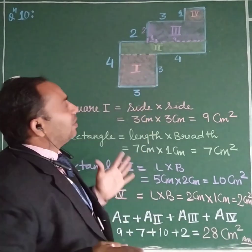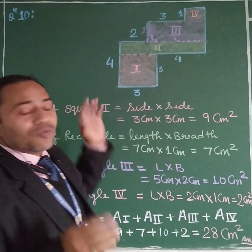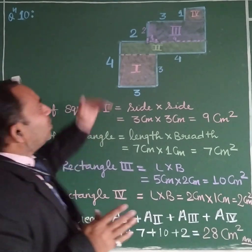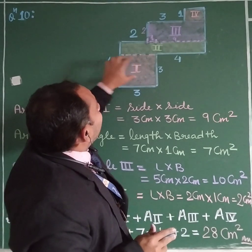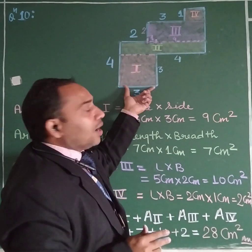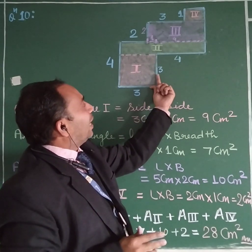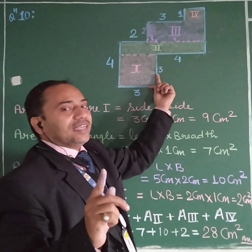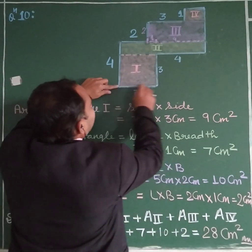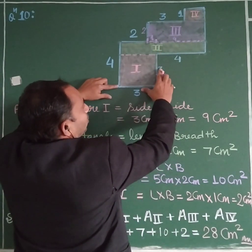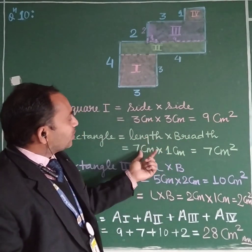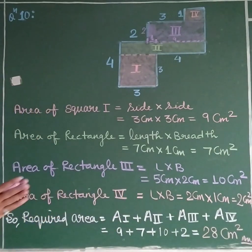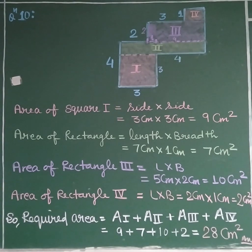So class, whenever a question gives a figure that is neither a rectangle nor a square, first separate it into squares or rectangles and find the dimensions clearly. Until we know the adjacent sides' values, we cannot find the area. The product of adjacent sides is the area, also known as length times breadth or side times side. Practice this type of question from your RS Agrawal.